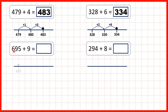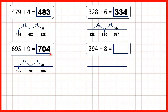Now we have 695 plus nine. Well, if we add five, that will take us to 700, because we already have nine tens in the number we start with. So we've added five, and we want to add nine altogether, so we just need to add another four, and that gives us 704 as our answer.